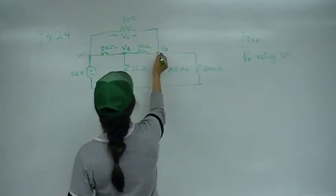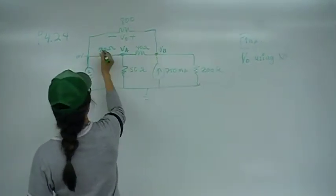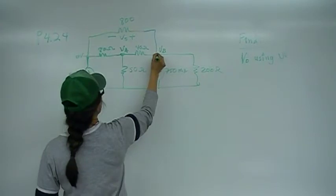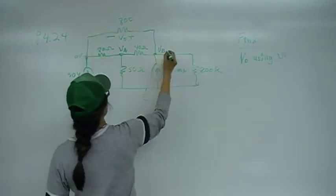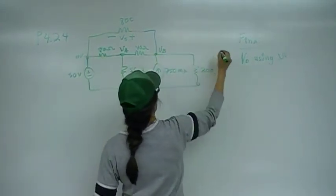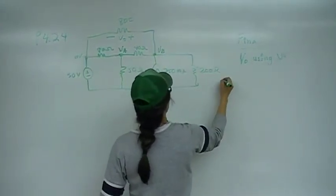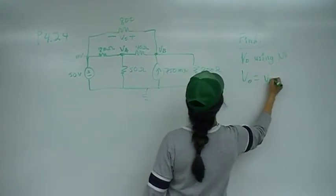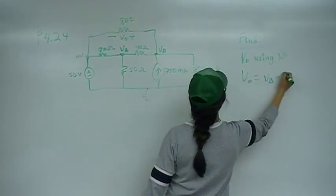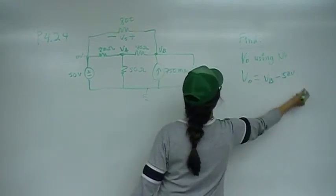V out, going from here, is going to be the difference of potential between VB and 50, so I can right away say that V out is going to be VB minus 50 volts.